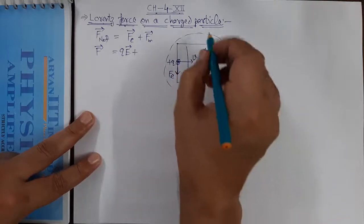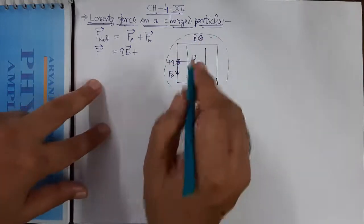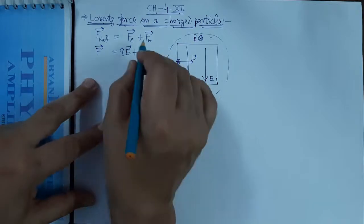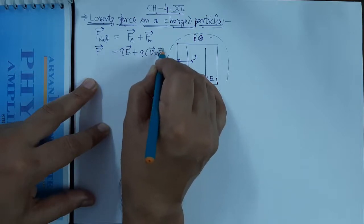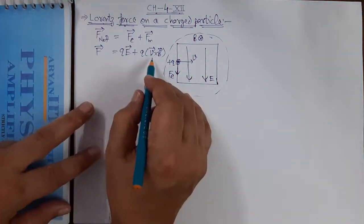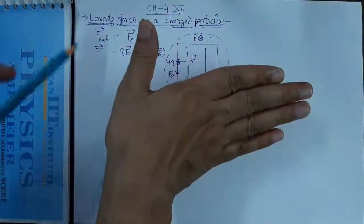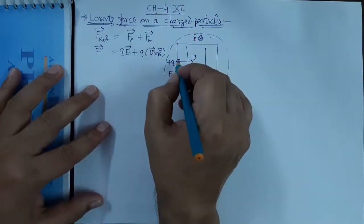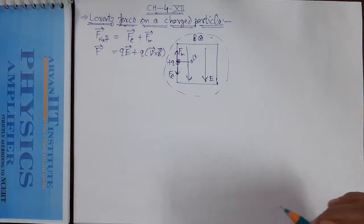In the same region, if we also have a magnetic field B directed inward (cross into the page), the particle also gets a magnetic force of Q into V cross B. The direction of magnetic force is given by the right-hand thumb rule: velocity is in one direction, magnetic field is inward, so rotating the right-hand fingers inward gives the force upward in the direction of the thumb.